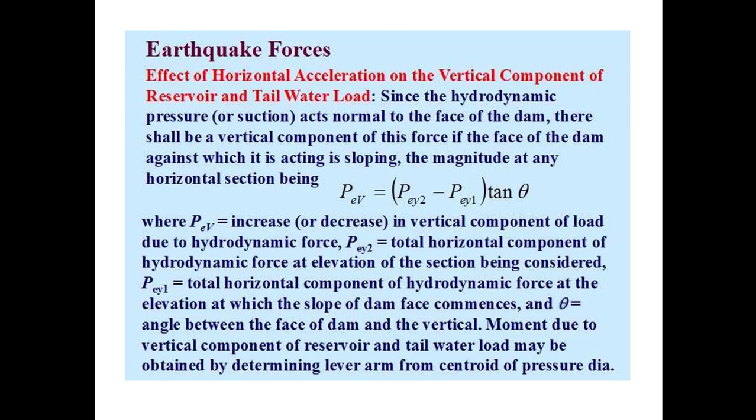The effect of horizontal acceleration on the vertical component of reservoir and tailwater loads: the hydrodynamic pressure acts normal to the face of the dam. There shall be a vertical component of this force if the face of the dam is sloping. The magnitude at any horizontal section is: delta_P_ey = (P_ey2 − P_ey1) × tan(theta), where P_ey2 is the total horizontal component of hydrodynamic forces at the elevation considered, P_ey1 is the total horizontal component at the elevation where the slope commences, and theta is the angle between the dam face and the vertical.